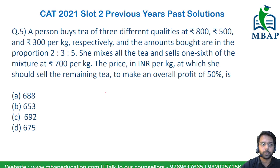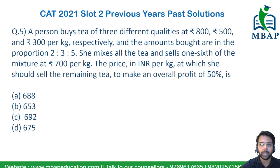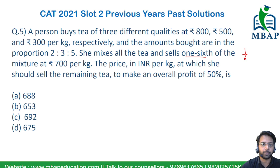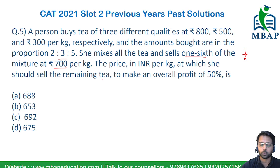The next question says: a person buys tea from three different teas at 800, 500, and 300 rupees per kg respectively, and the amounts bought are in the ratio 2:3:5. She mixes all three teas and sells one-sixth of the mixture at 700 rupees per kg. The price in INR per kg at which she should sell the remaining five-sixth of the total to make it overall profitable at 50%.